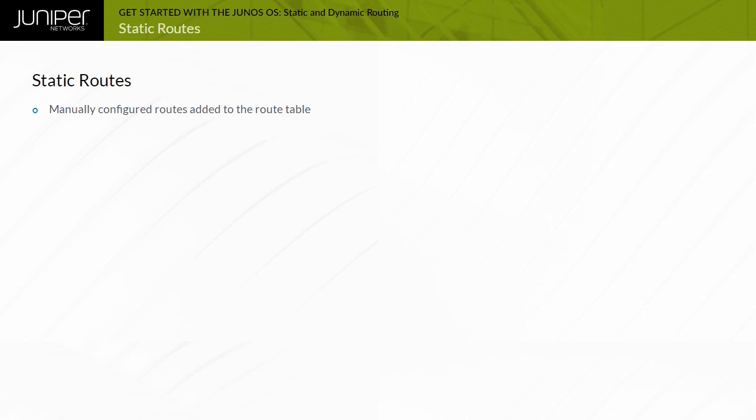Static Routes are routes that are manually configured. They are often used to provide a default route to the Internet from within a network, or to provide a route to a customer or partner network. All configuration for Static Routes occurs at the Edit Routing Options level of the hierarchy.